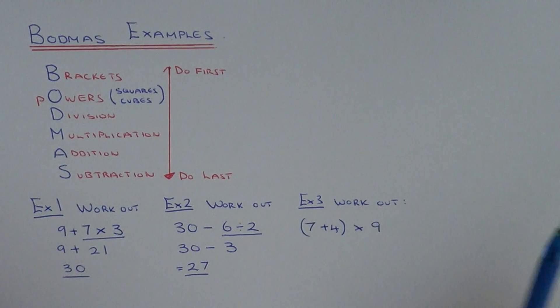So our final example then. We have 7 add 4 in a bracket multiplied by 9. So this time we have something inside the bracket. If you get brackets you always do the bit inside the bracket first of all.